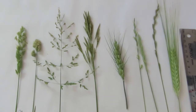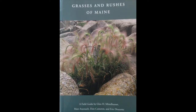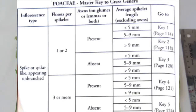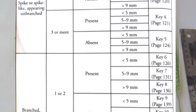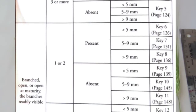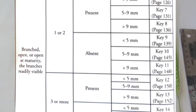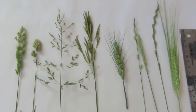Today I would like to go through learning how to ID grasses using Grasses and Rushes of Maine. I'm talking specifically about the key that's in this book; however, the features I will talk about would be used for other guides also.